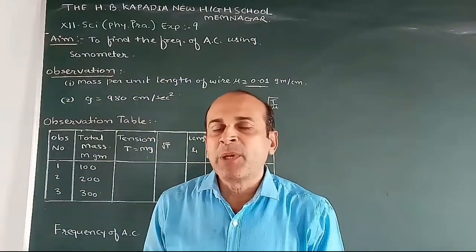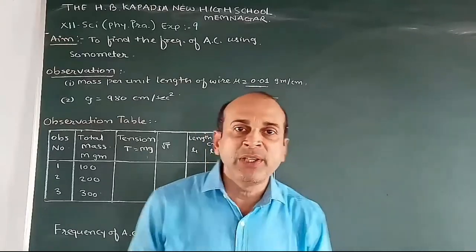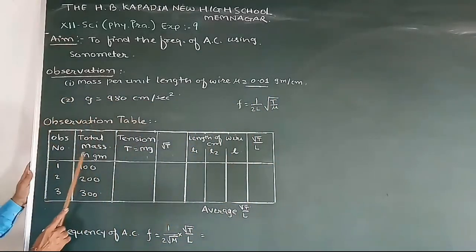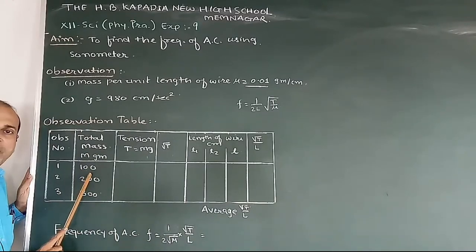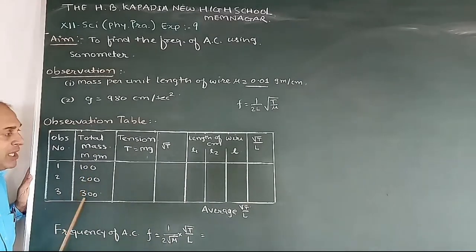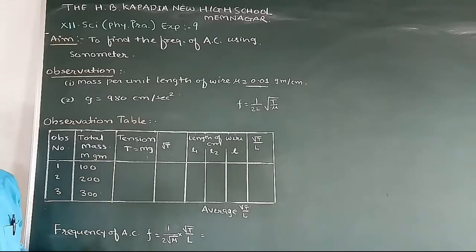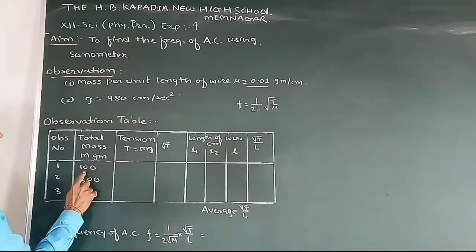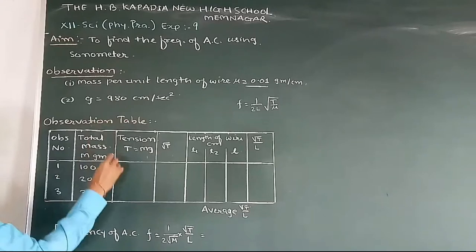Let me perform this experiment for 100, 200, 300 grams. The total mass at the end of the wire is 100, 200, and 300. The tension produced in the wire is T equals mg. So 100 times 980 is 98,000, and its square root is equal to 313.0.